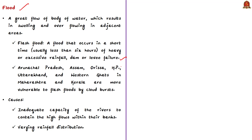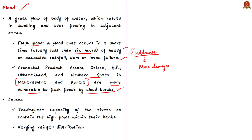If a flood occurs in less than six hours of heavy rainfall, it is called a flash flood. Because of the suddenness there are more severe damages. In India, states such as Arunachal Pradesh, Assam, Odisha, Himachal Pradesh, Uttarakhand and the region of Western Ghats in Maharashtra and Kerala are more vulnerable to flash floods caused by cloud bursts. If 10 centimeters of rainfall is received in a given area in one hour, such rain events are termed cloud bursts. Mountainous regions are more prone to cloud bursts because of orographic rainfall.